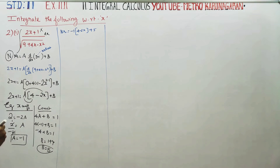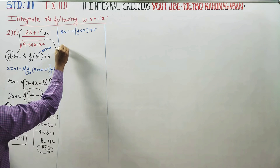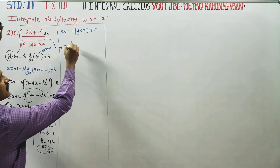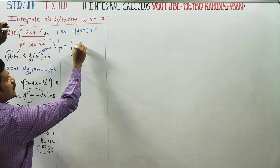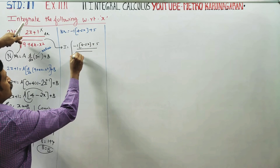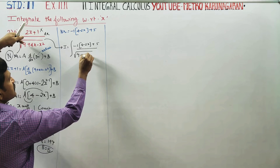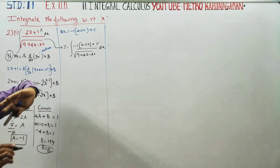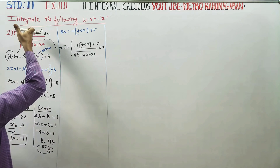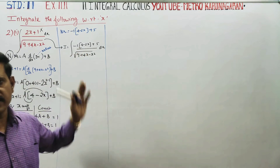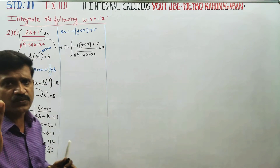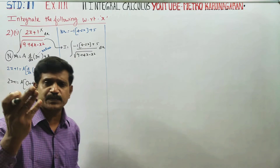So the numerator −1·(4 − 2X) + 5, placed over the denominator √(9 + 4X − X²), gives us I = ∫ [−1·(4 − 2X) + 5] / √(9 + 4X − X²) dx. Simplifying: I = ∫ (−(4 − 2X) + 5) / √(9 + 4X − X²) dx.